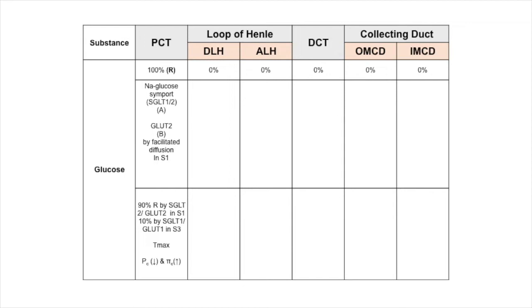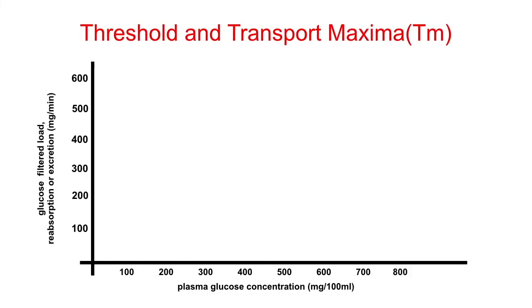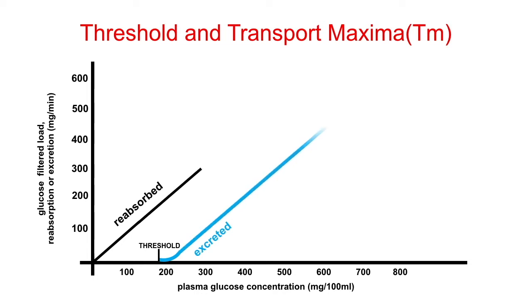These transport systems are so efficient that they remove all glucose and amino acids from the tubular lumen. At a plasma glucose of 160 to 200 mg per deciliter, glucosuria begins — this is called the threshold. At 350 mg per deciliter, all transporters are fully saturated, which we call Tmax, or transport maximum.